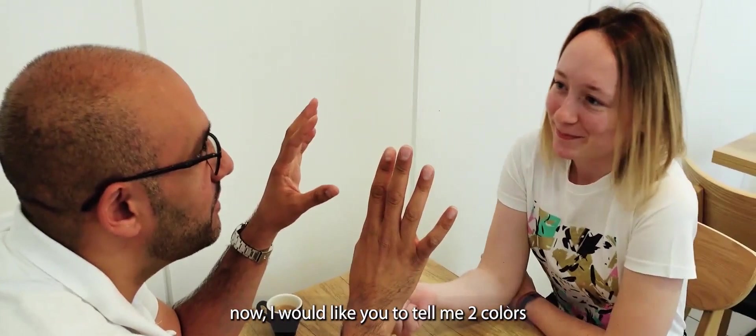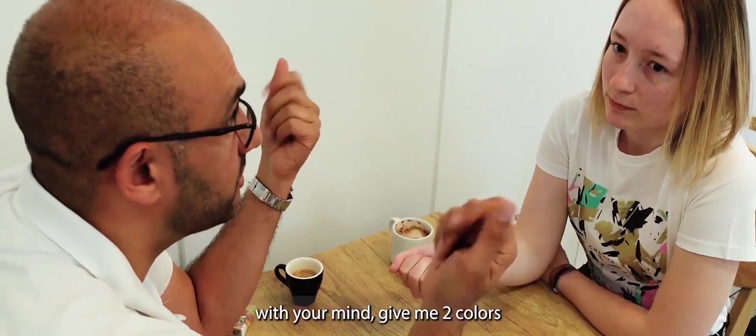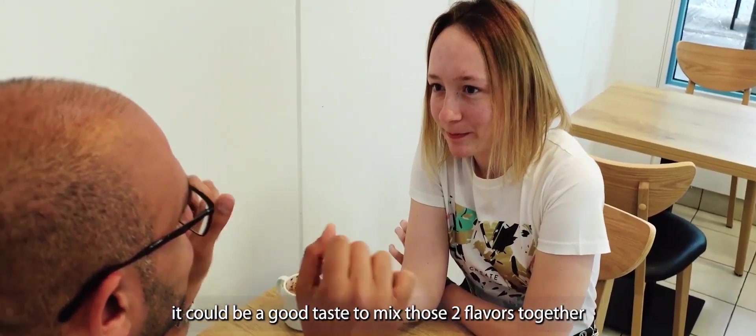So now, I would like you to tell me two colors. You have now green, orange, and pink, like apple, orange, and strawberry. Give me two colors, just say them like this. Orange and strawberry. Orange and strawberry. It could be a good taste to mix the two flavors together.